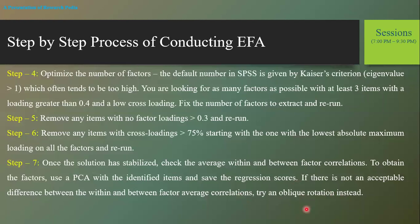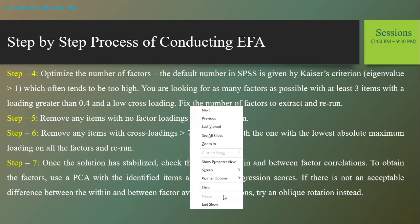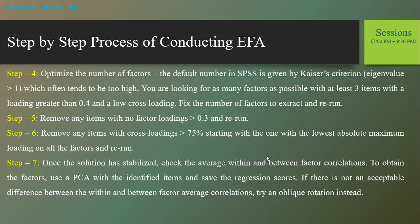The oblique rotation method is applied when you have factors with high correlation between them. You need to start from the Varimax method first because at the start we cannot judge whether the factors are correlated or not. Start with the Varimax procedure, which assumes your factors are uncorrelated. But if during the procedure it is found that your factors are highly correlated and cross-loading is greater than 75 percent, then use the oblique rotation procedure.